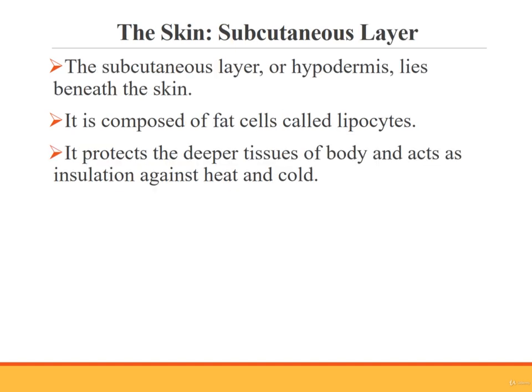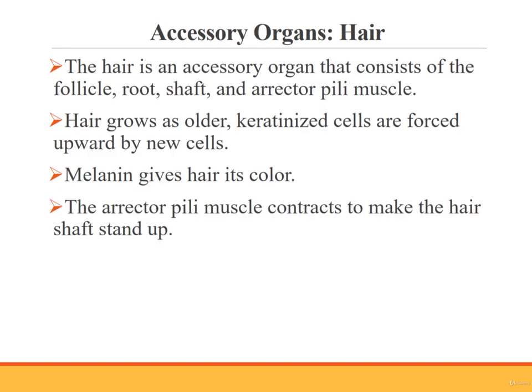Below the skin lies the subcutaneous layer or the hypodermis. This layer is made of flat cells called lipocytes. The functions of the subcutaneous layer include protecting the deeper body tissues and acting as insulation against heat and cold. Accessory organs of the skin are located within the dermis and include the hair, nails, sweat glands, and sebaceous glands.